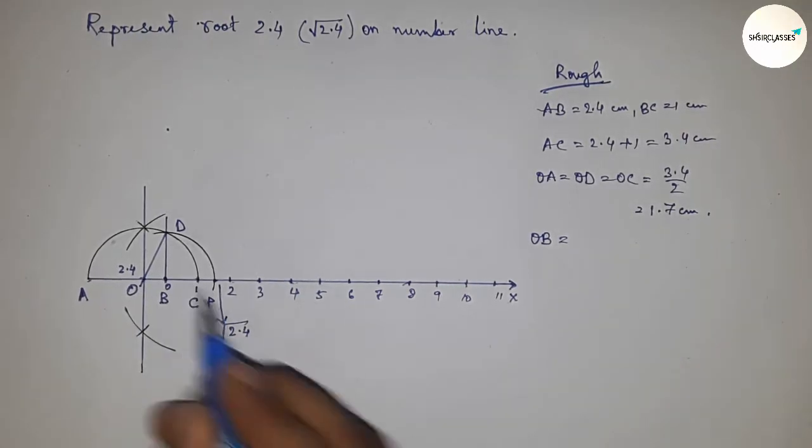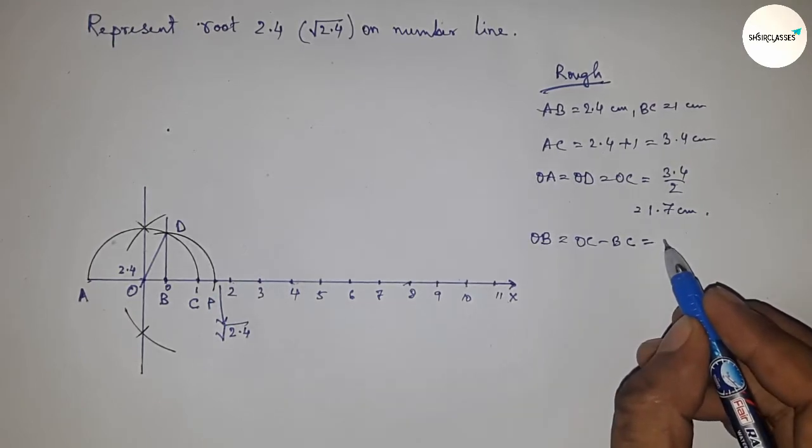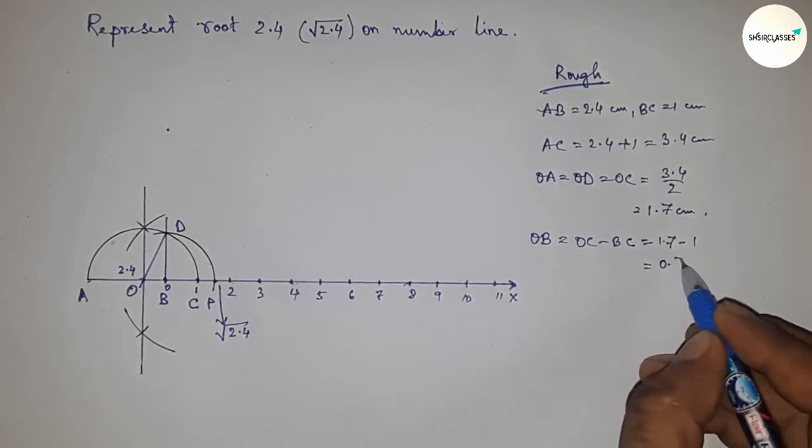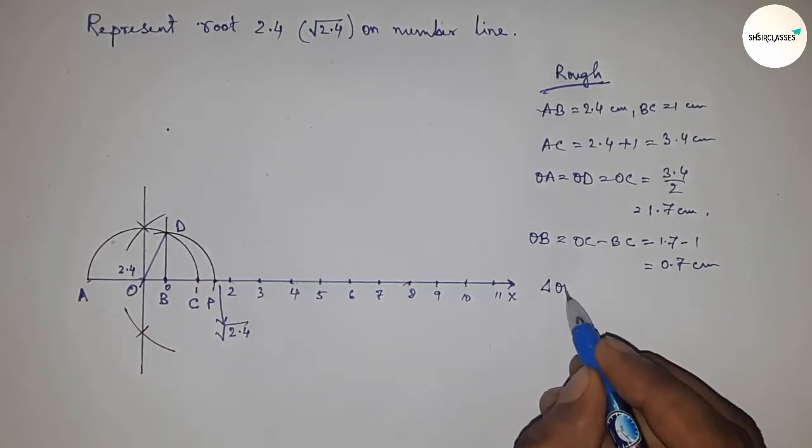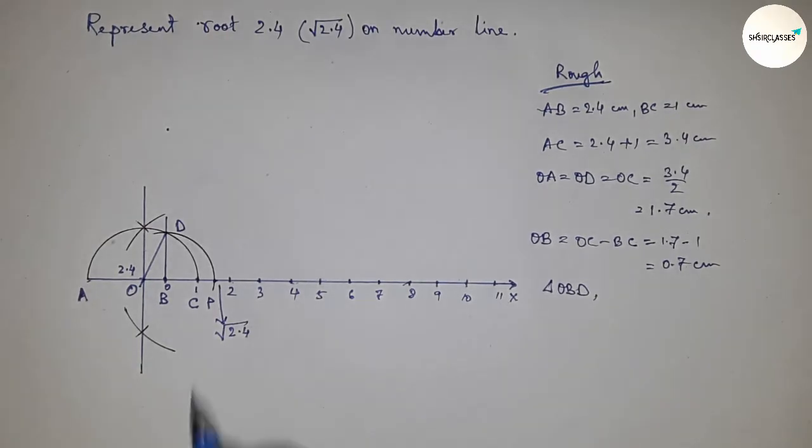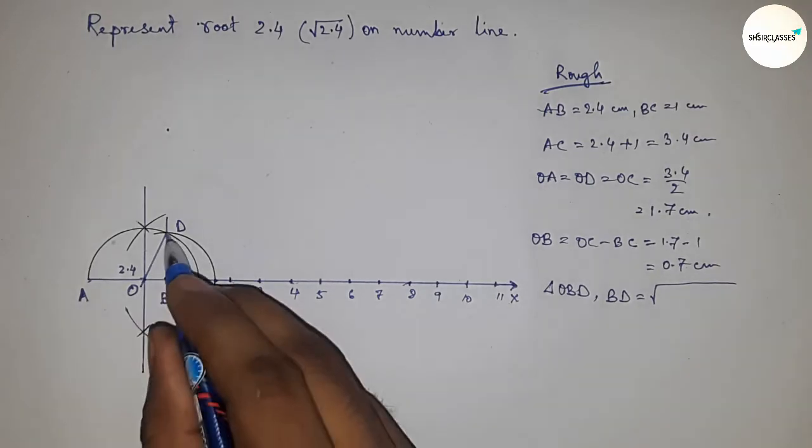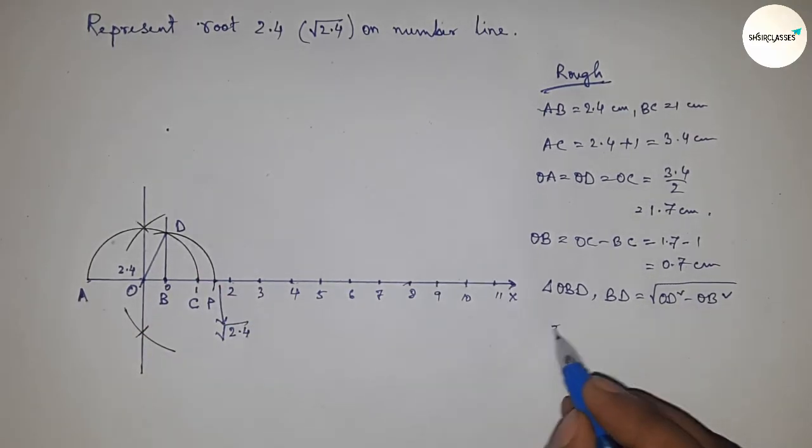The distance OB equals OC minus BC. Putting the values, OB equals 1.7 minus 1, which is 0.7 centimeters. From right angle triangle OBD, by Pythagoras theorem, BD equals the square root of hypotenuse squared minus base squared.